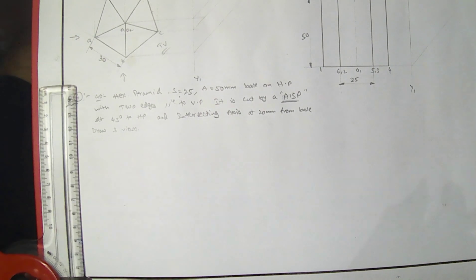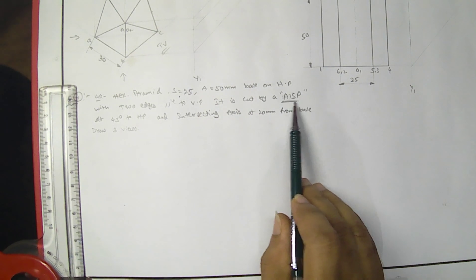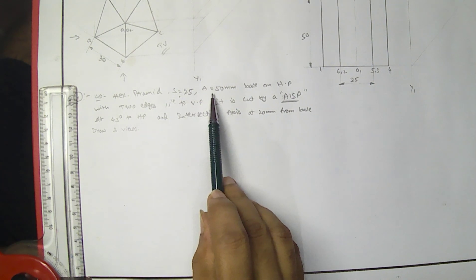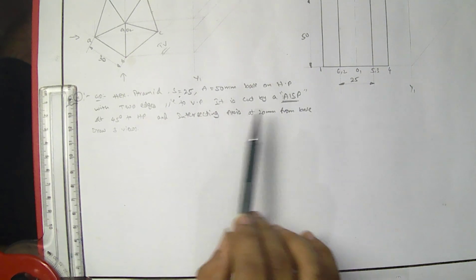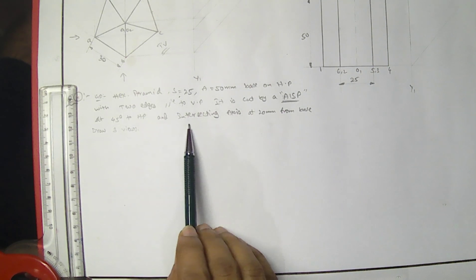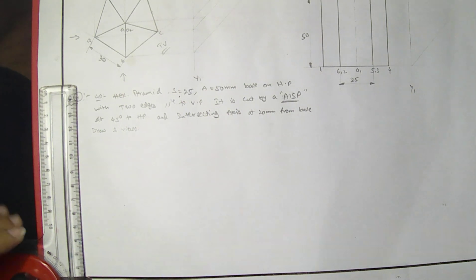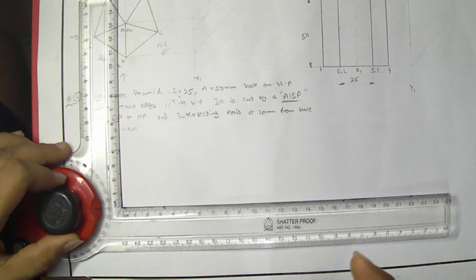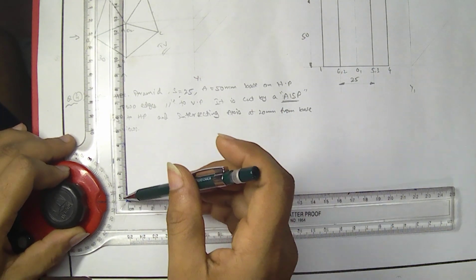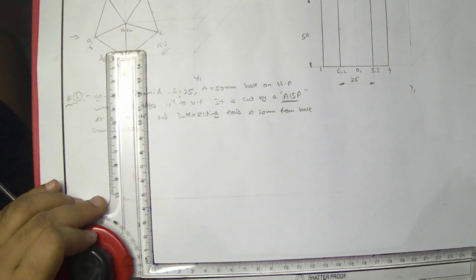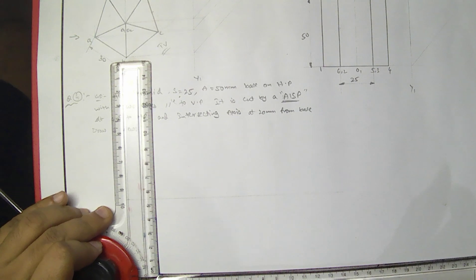Now we are going to discuss about a hexagonal pyramid sectioned by an auxiliary inclined section plane. The given data: hexagonal pyramid, side 25, axis 50, base is on HP, and two of the edges are parallel to the VP. It is cut by an auxiliary inclined section plane at 45 degrees to the HP, intersecting the axis 20 mm above the base. Draw the three views.